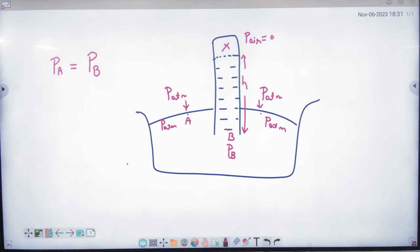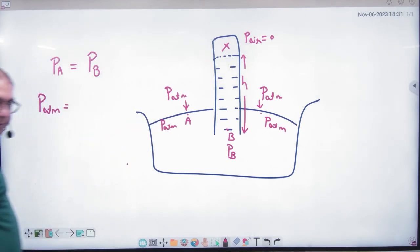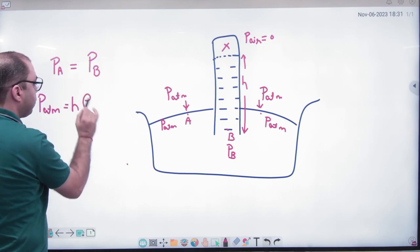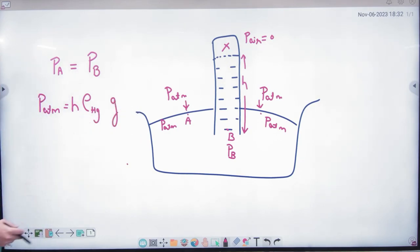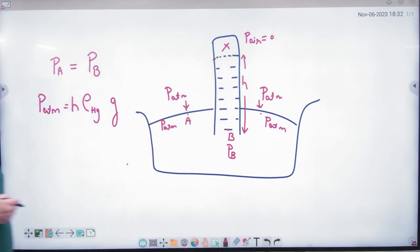Now liquid is not going down. Atmosphere pressure has been balanced. Now point A, how much pressure? P atmospheric. And what about point B? It will be H times rho times G. H into density of mercury into G. And air pressure is zero, so air pressure will not be added. So height is H, H into density of mercury into G. Atmospheric pressure has come out.